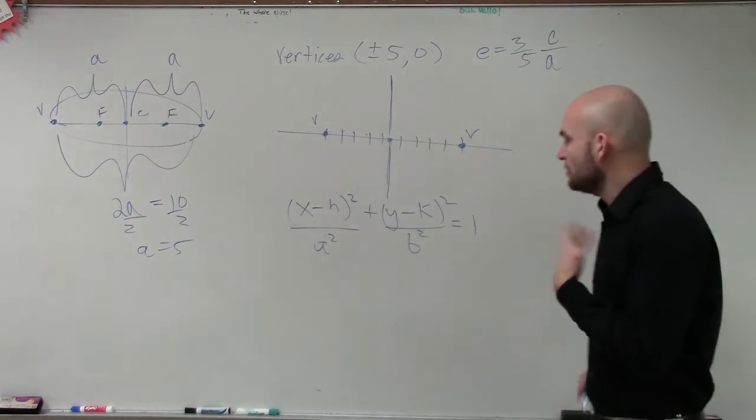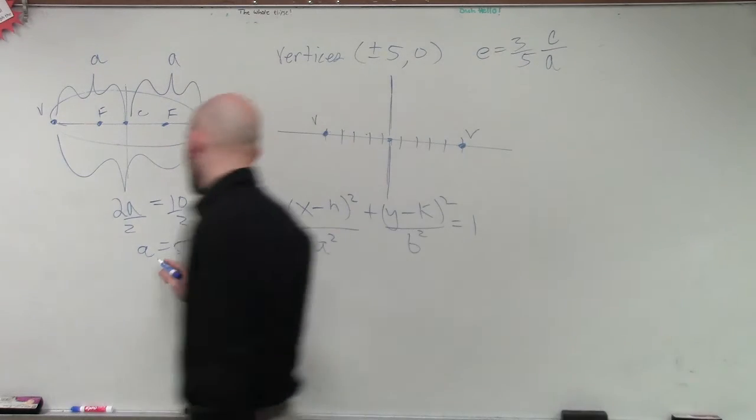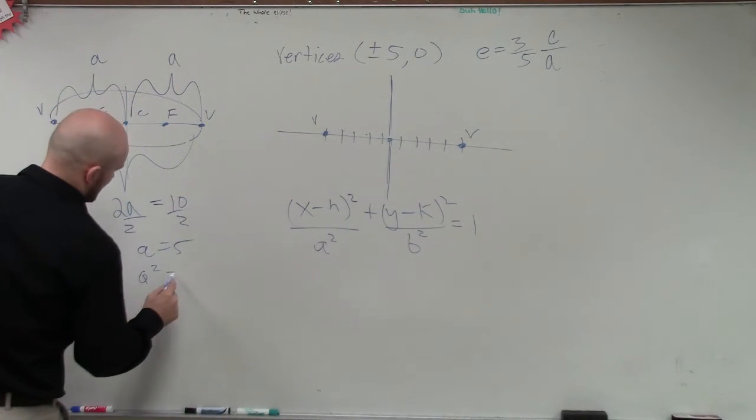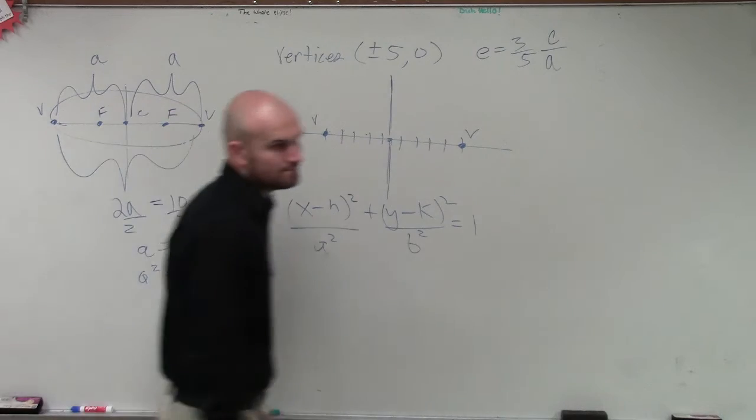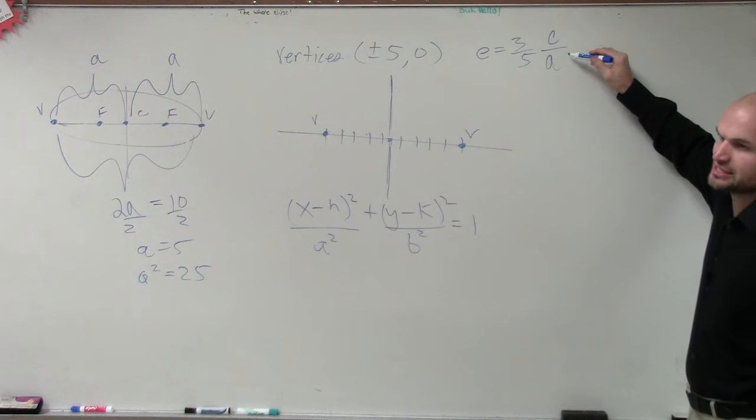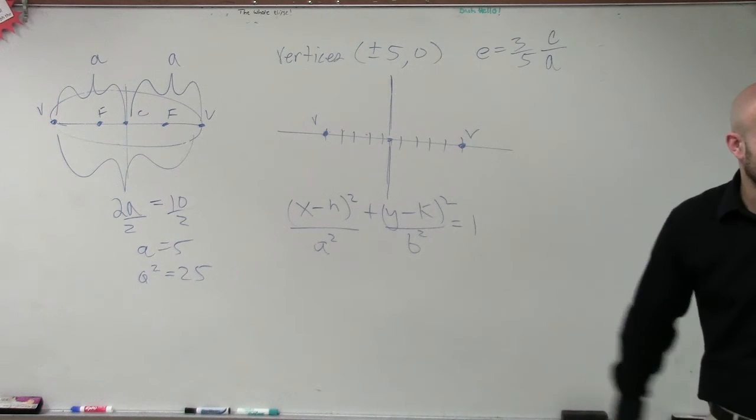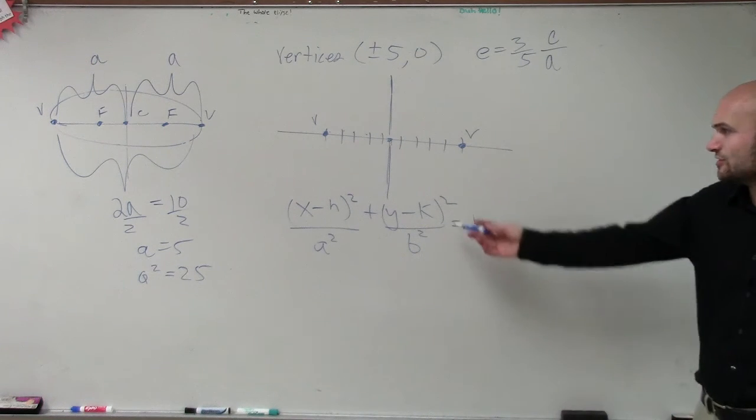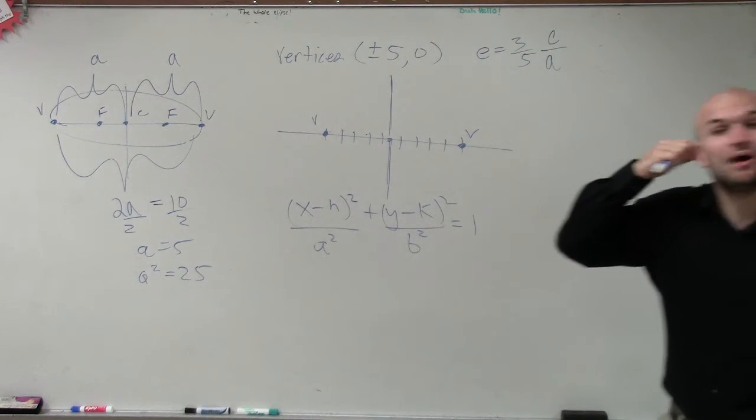Now, we know what a is. So therefore, a squared equals 25. We know what c is - c is up here in eccentricity because that's what they gave us. Do we care what c is? Do we need to know what c is for the formula? No. But why do we need to know c?